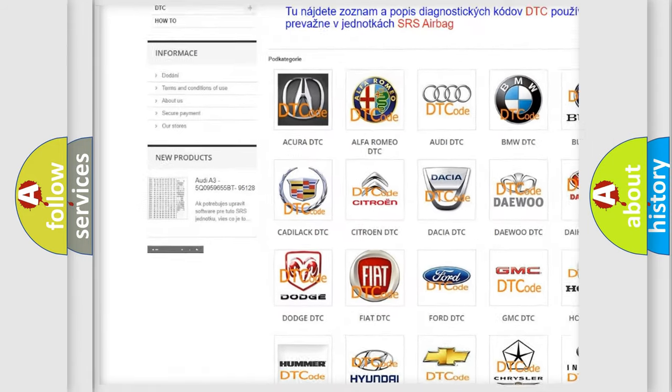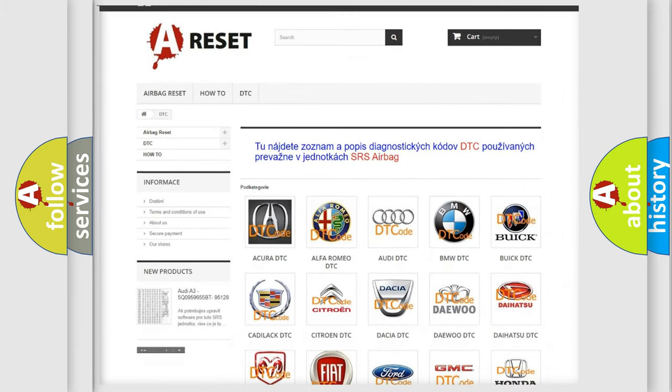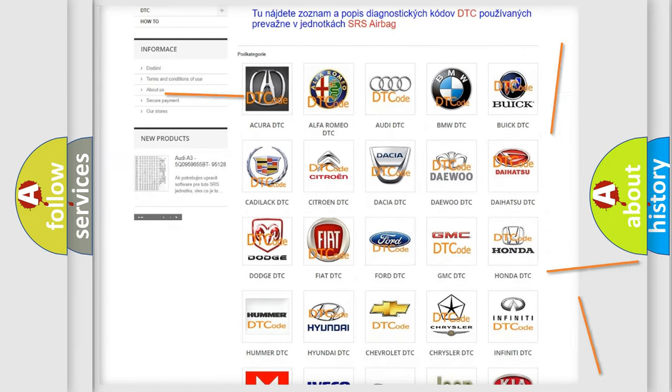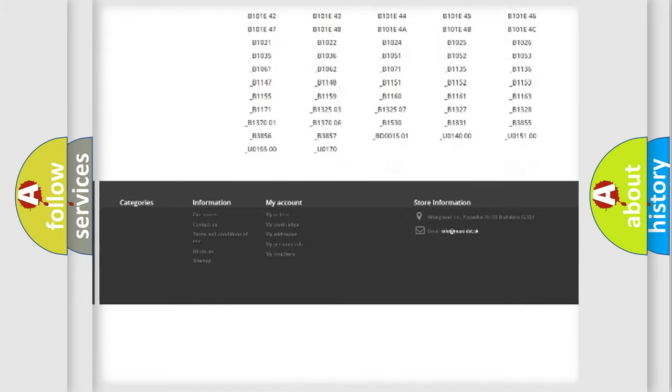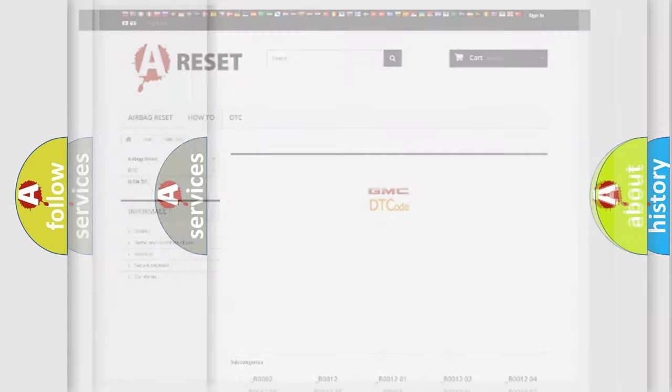Our website airbagreset.sk produces useful videos for you. You do not have to go through the OBD2 protocol anymore to know how to troubleshoot any car breakdown. You will find all the diagnostic codes that can be diagnosed in GMC vehicles, and also many other useful things.